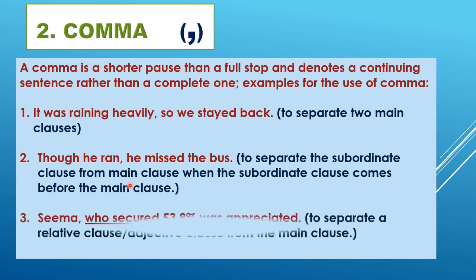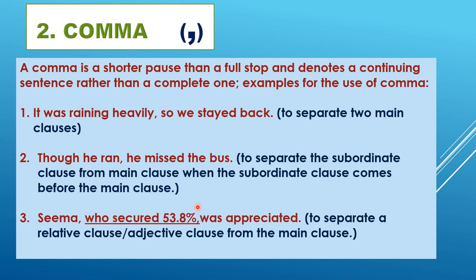In the next example: 'Seema, who secured 53.8 percent, was appreciated.' The actual sentence is 'Seema was appreciated,' but you want to tell something about Seema. The relative clause 'who secured 53.8 percent' is about Seema but not actually part of the main sentence. So you separate it by putting commas to highlight that this is extra information.